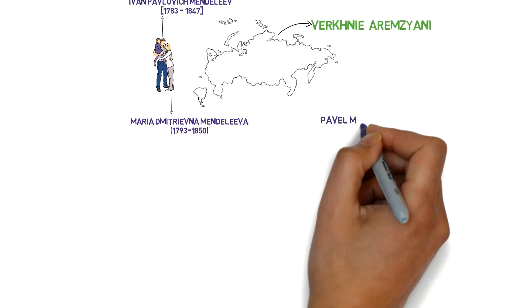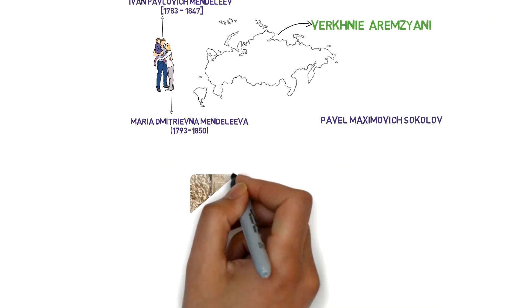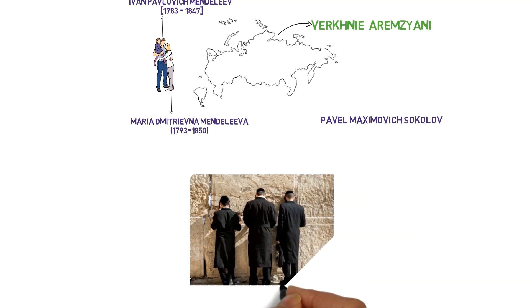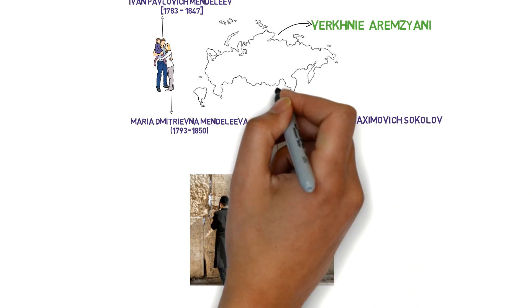His paternal grandfather, Pavel Maksimovich Sokolov, was a Russian Orthodox priest from the Tver region.